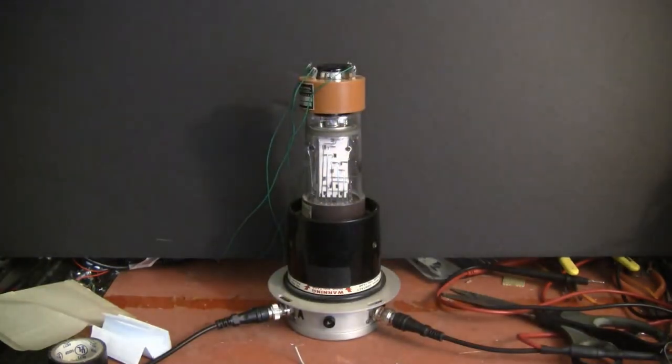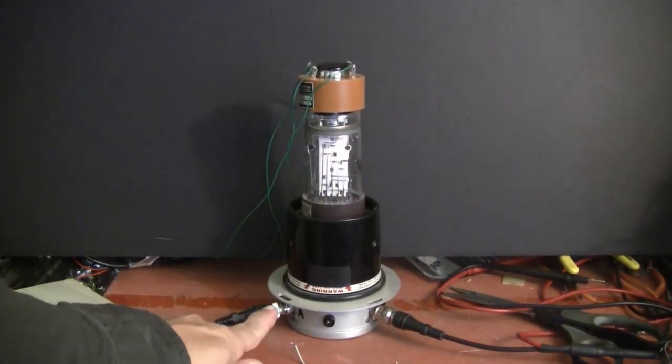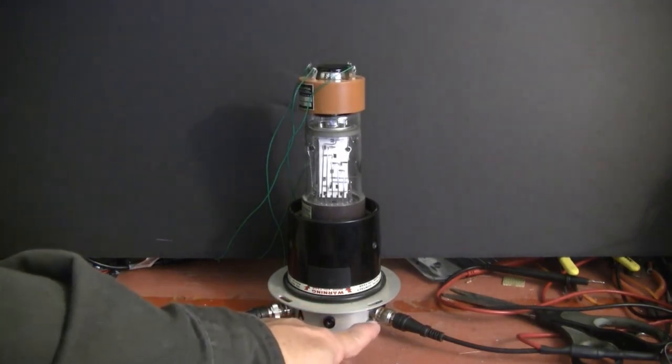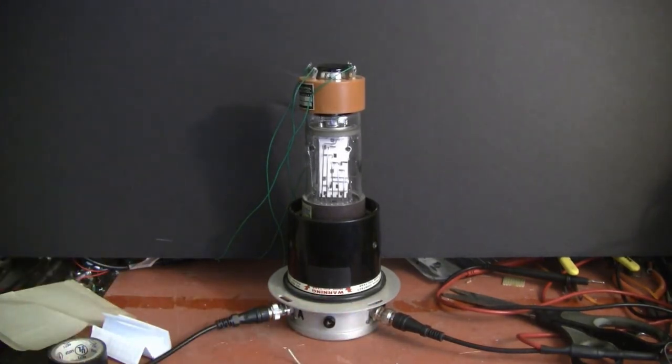And then the output of the photomultiplier tube is applied directly to the intensity input on the back of the oscilloscope. The other jack on this base is where I inject minus 1,000 volts to power the tube. It draws virtually no current.